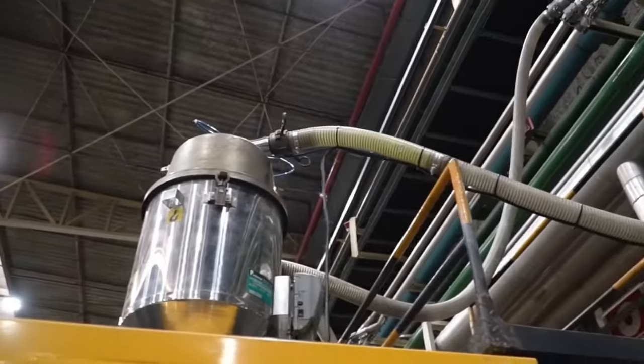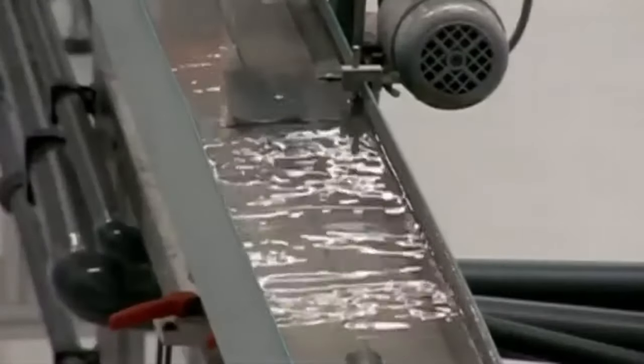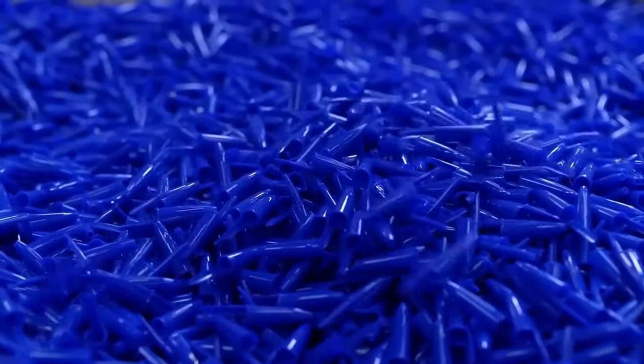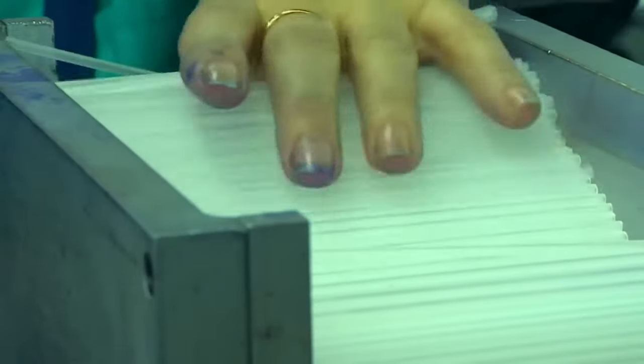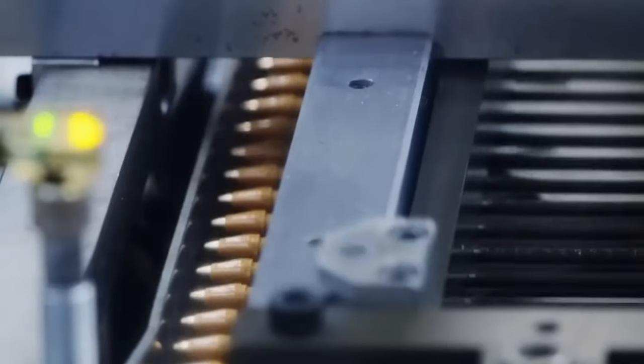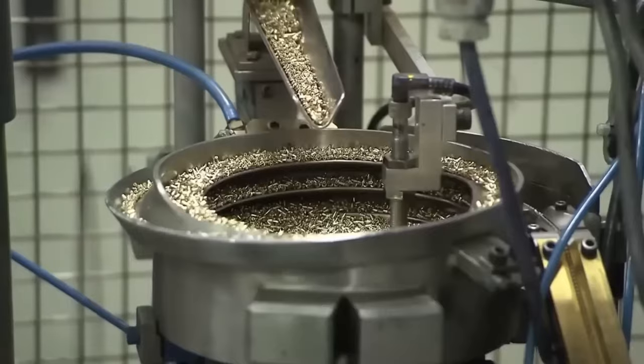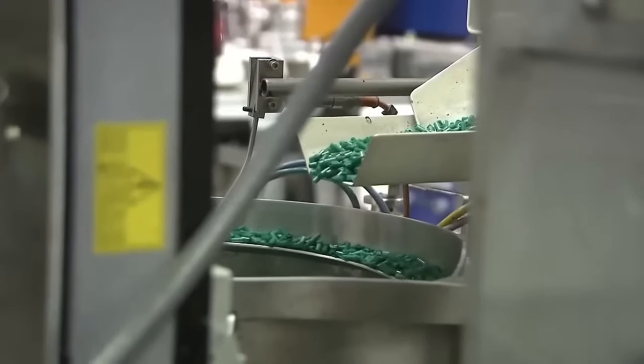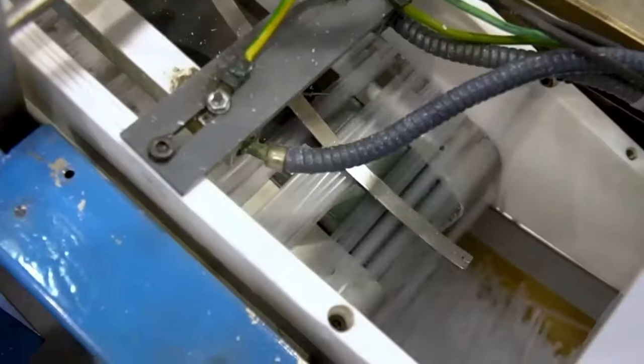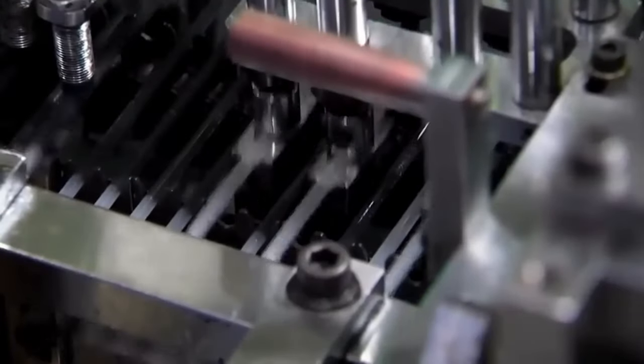Once all the pieces are formed, it's time to assemble the Bic pens. The first step involves inserting the tungsten carbide ball into the narrower end of the tip. This task takes place in a large assembly room where countless machines fit the parts together around the clock. Plastic tubes are filled with ink and connected to the tip. Then, the assembly is injected with 1.3 grams of ink into each pen's ink cartridge. Next, the tips are attached to the filled cartridges.